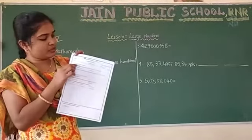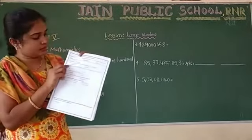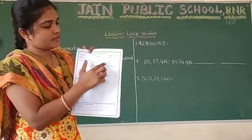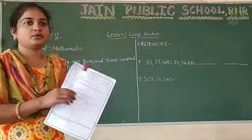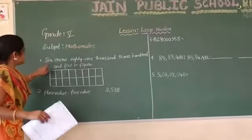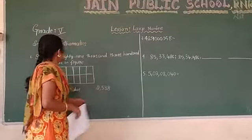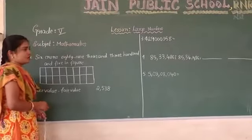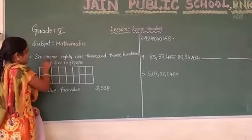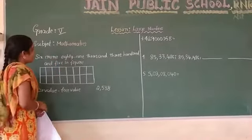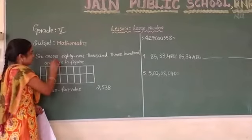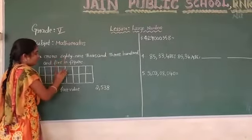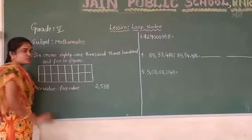The first question is: choose the correct answer. We have to write 6 crore 89,305 in figures. So in the Indian place value system, for this number name we have to write the number. Before writing the answer, we have to solve using the place value chart.